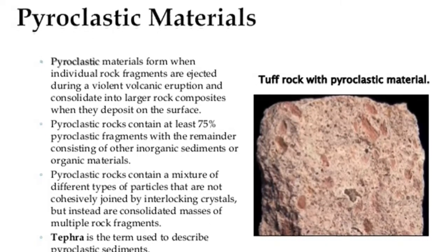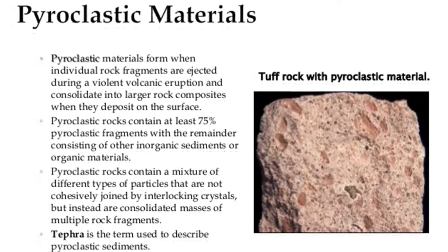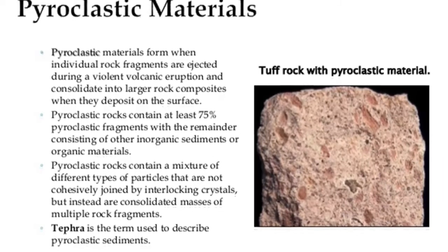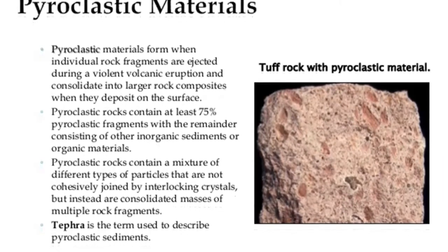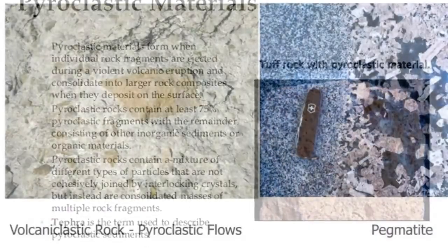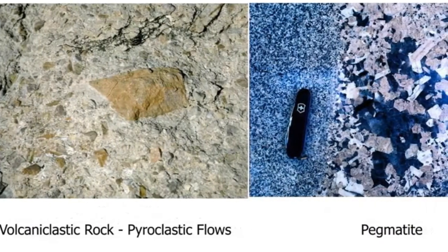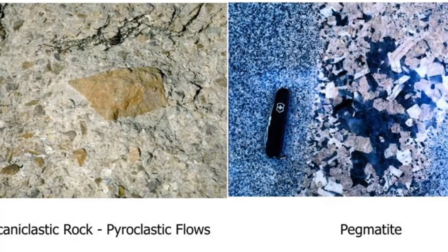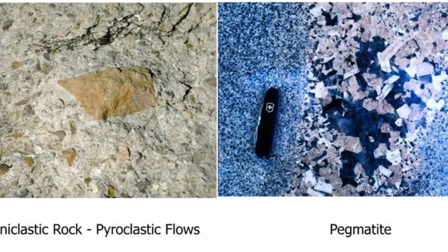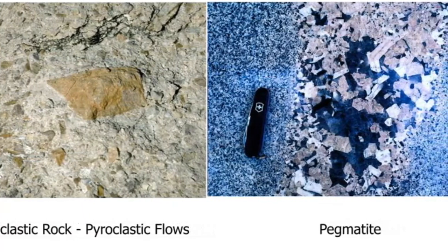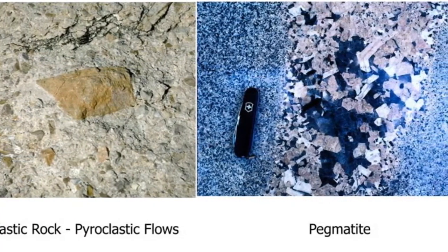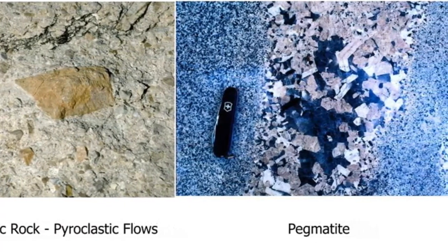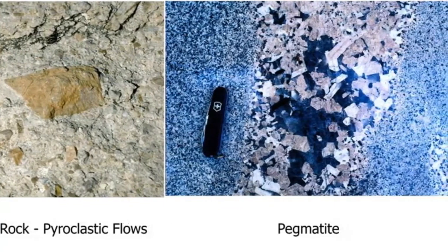What is pyroclastic texture? Some igneous rocks are formed from the consolidation of individual rock fragments that are ejected during a violent volcanic eruption. The ejected particles might be very fine ash, molten blobs, or large angular blocks torn from the walls of the vent during the eruption. Igneous rocks composed of these rock fragments are said to have a pyroclastic texture, sometimes referred to as fragmental texture.